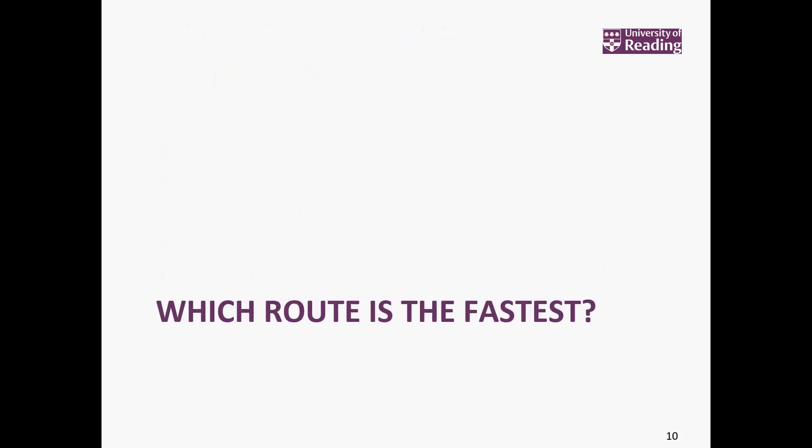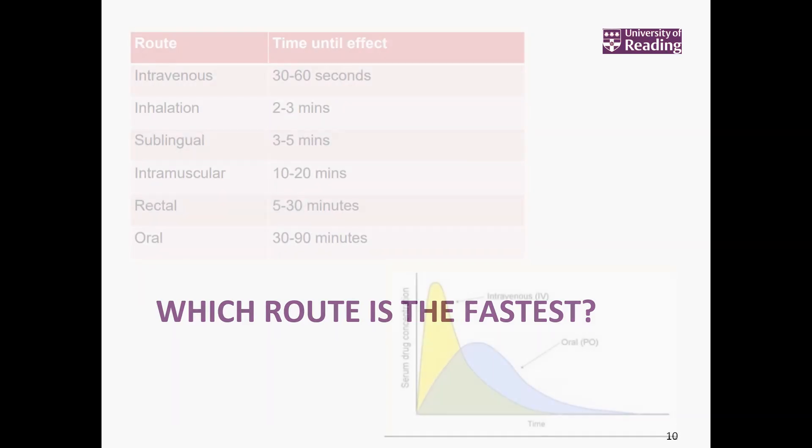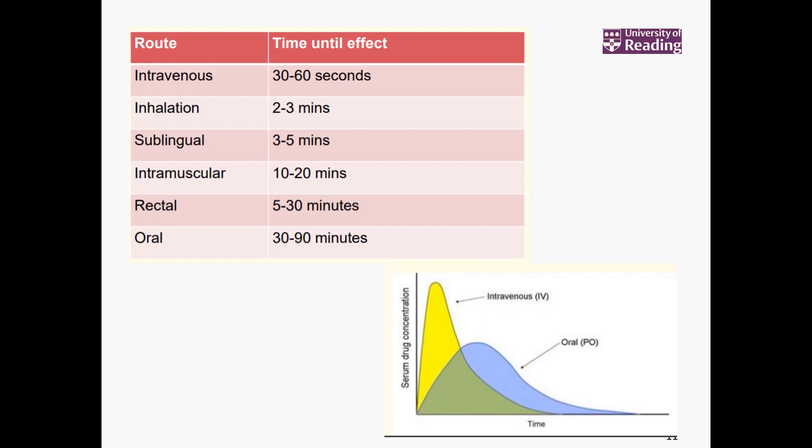Thinking about the reasons we don't give oral, and the different routes we mentioned earlier — which one do you think would be the fastest if we need something to work very fast? If you said intravenous, then that's correct. Intravenous would give the fastest route — that would act within 30 to 60 seconds, so under a minute you'd experience an effect.